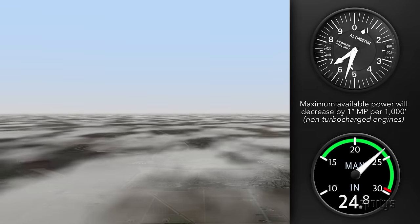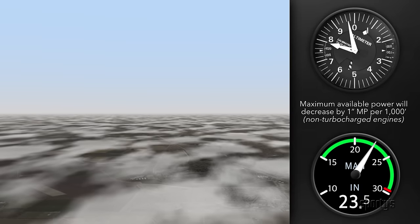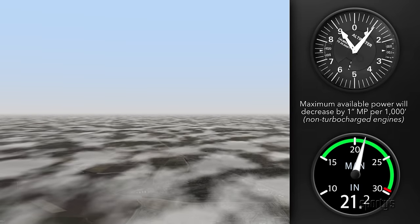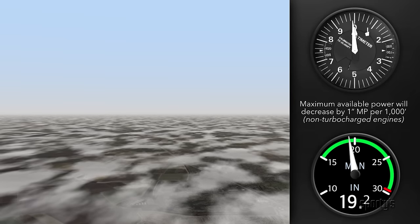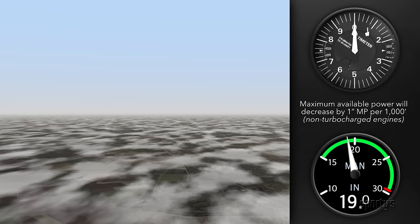At full throttle, manifold pressure will decrease at the rate of 1 inch for each thousand feet of altitude. This translates to a loss of about 3% of horsepower for every 1,000 feet of altitude.